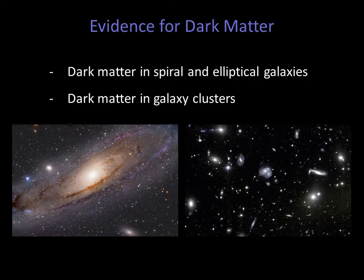There is currently ample scientific evidence to support the existence of dark matter. I'm going to describe the observations that provide this evidence, and what these observations can tell us about the nature of dark matter. We'll see we have evidence for dark matter in our own Milky Way, as well as in other spiral galaxies. Astronomers also have data from elliptical galaxies that is consistent with dark matter. On a larger scale, observations of galaxy clusters imply there are large amounts of dark matter within clusters.